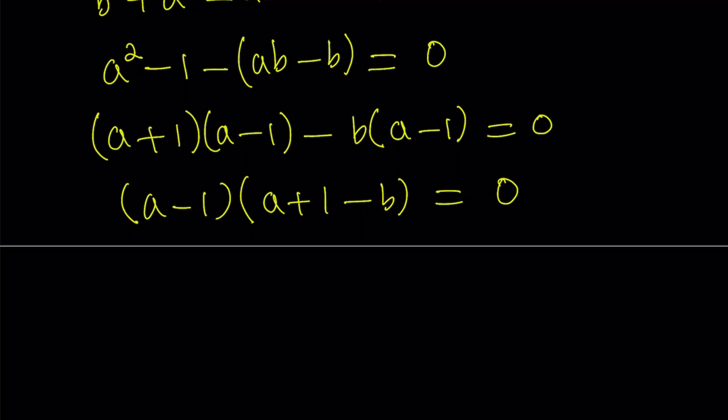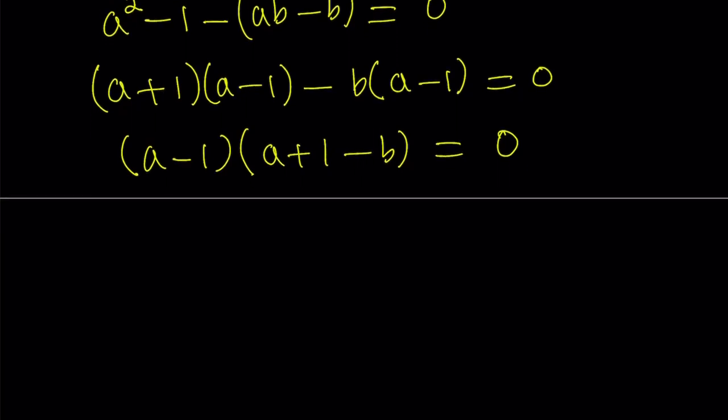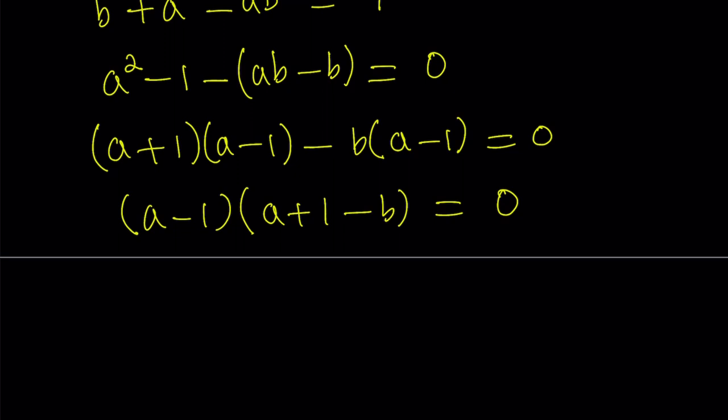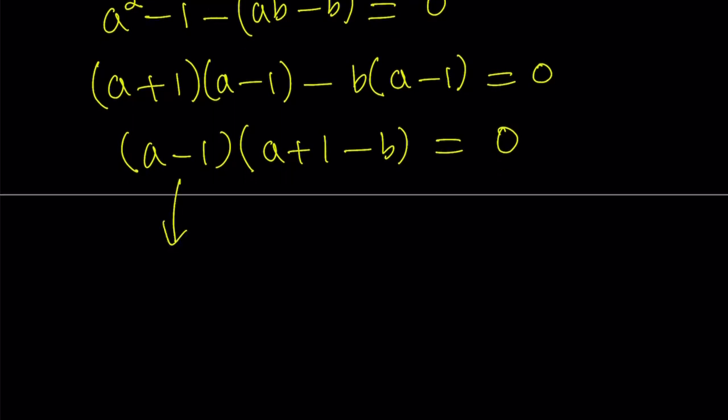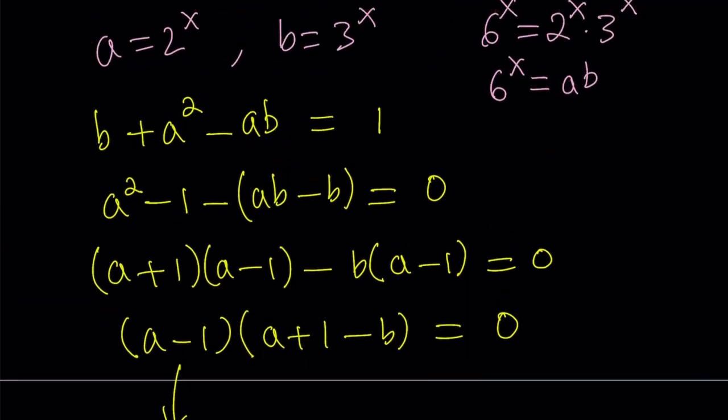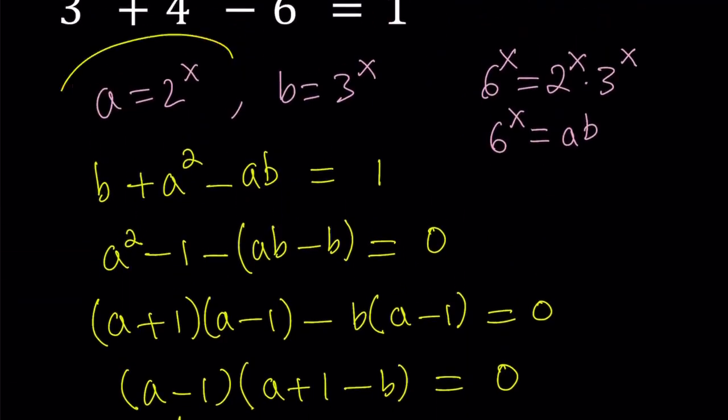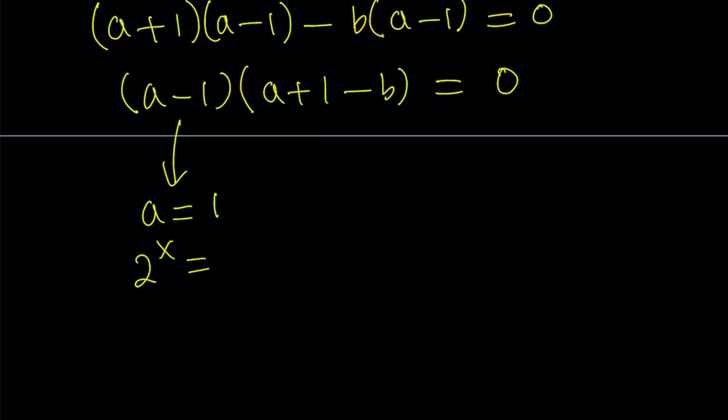So, we can take out a minus 1 and then we have a plus 1 minus b. So, factoring is very important for solving equations of any kind because that gives us the roots. With the sum, you don't get that. So, a minus 1, set it equal to 0. You're going to get a solution that means a equals 1. But what is a? Let's go back. A is equal to 2 to the power x. So, we have to back substitute. Replace a with 2 to the power x equals 1.